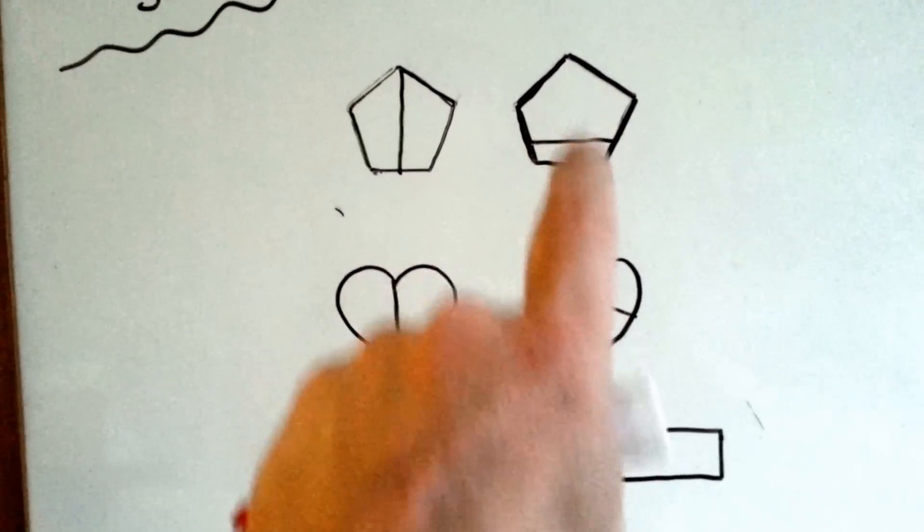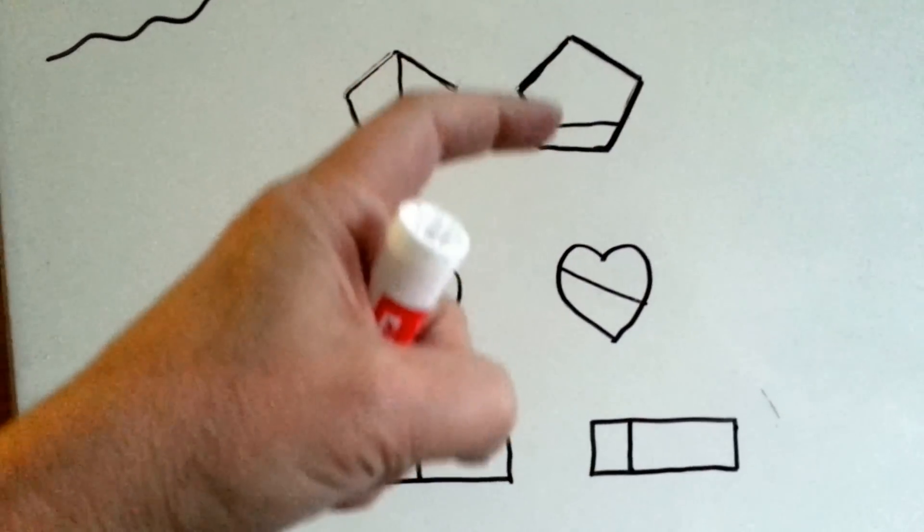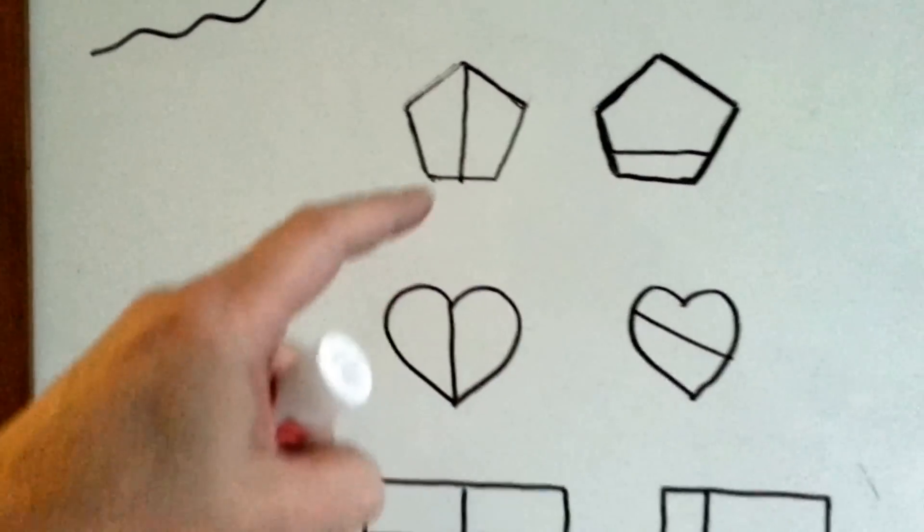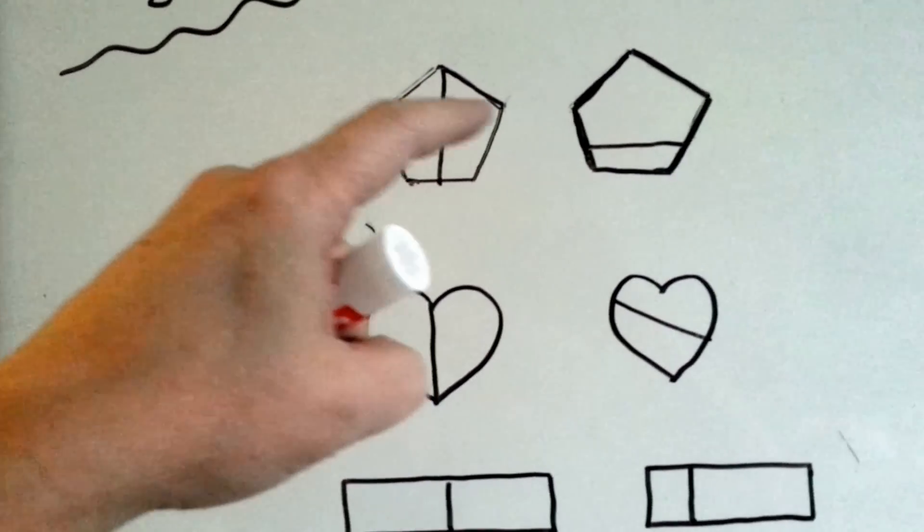No. Somebody would get a big piece and somebody would get a little piece. To be fair, you'd have to cut the cookie directly down the center to two equal parts, like that.